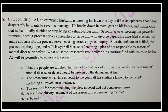The prosecutor can state these things orally or in writing filed with the court before the plea can be entered — this is part of the prosecutor consenting. We need the prosecutor to say all of these: that the people are satisfied the defense of lack of criminal responsibility by reason of mental disease or defect would be proven by the defendant at trial; the prosecutor must cede in detail to the court all evidence known to the people, including all psychiatric evidence; and the reasons for recommending the plea in detail and not in conclusory terms. All three of those things are needed from the prosecutor.